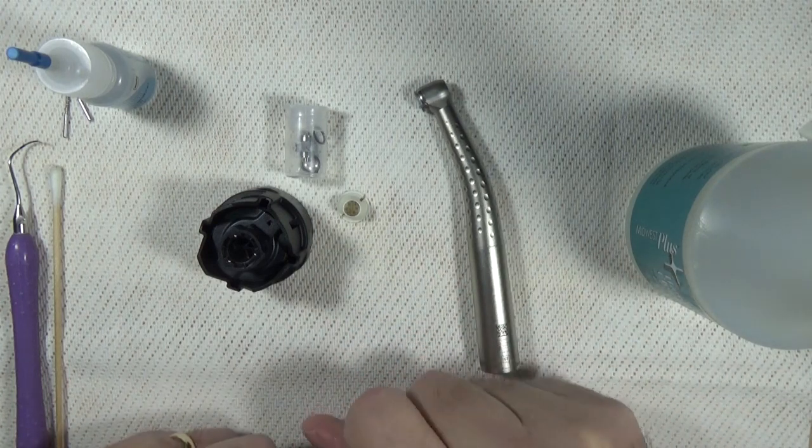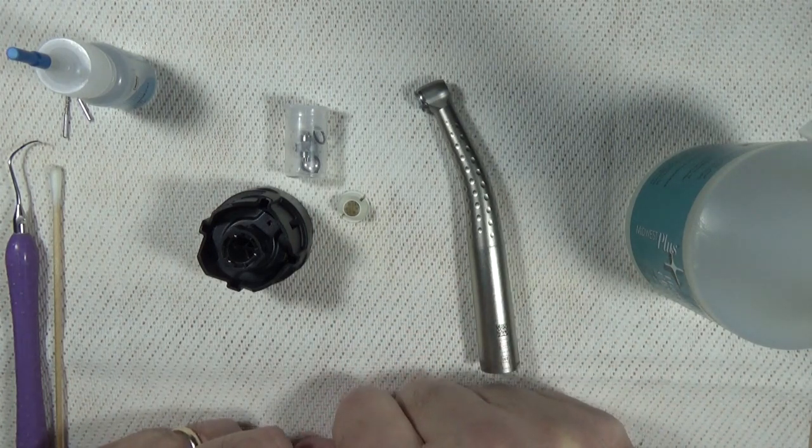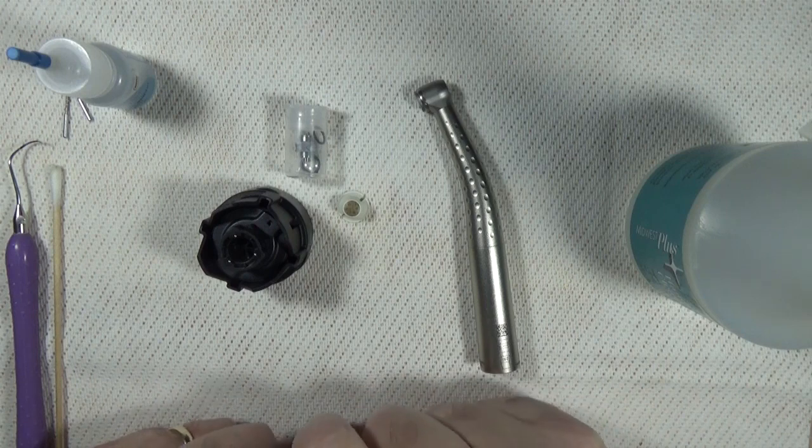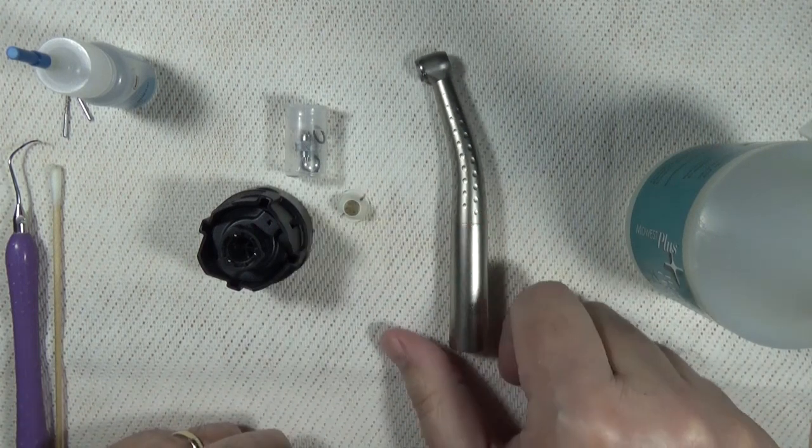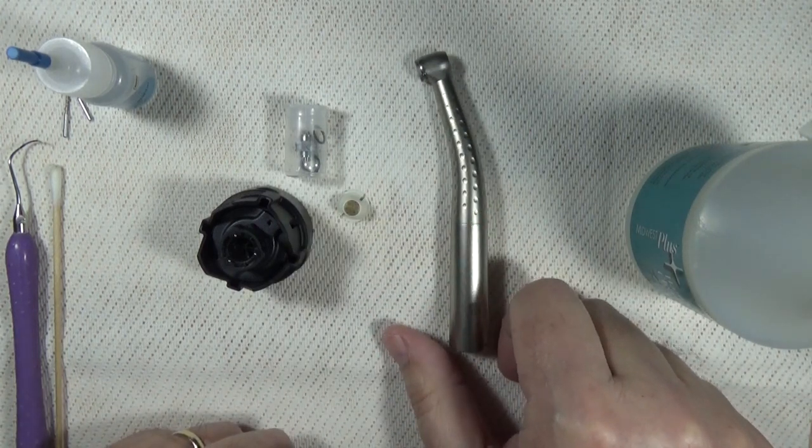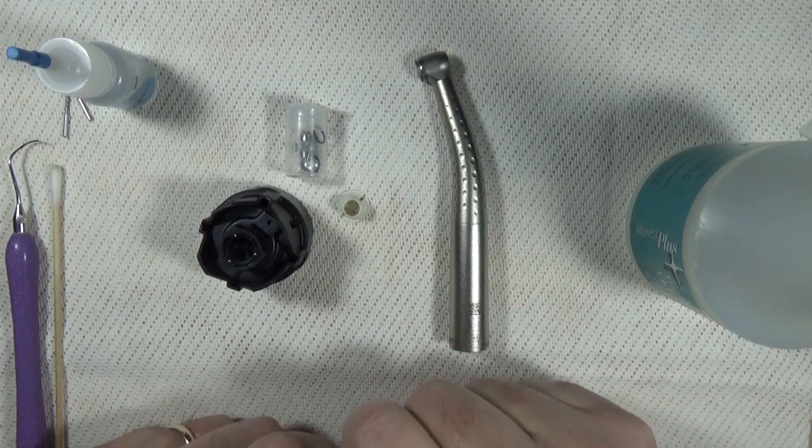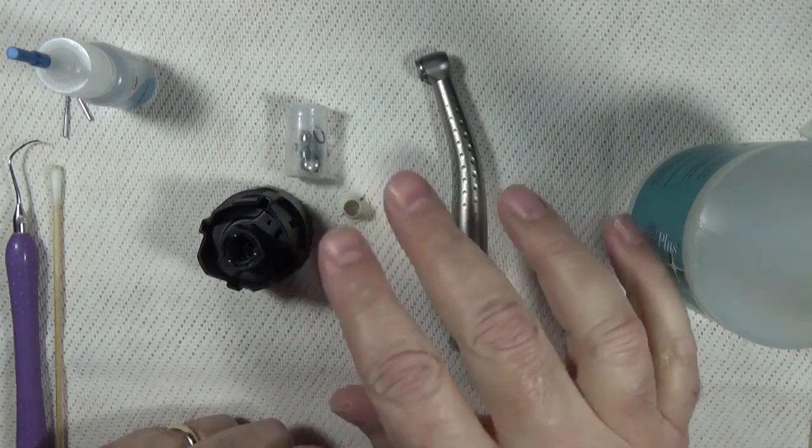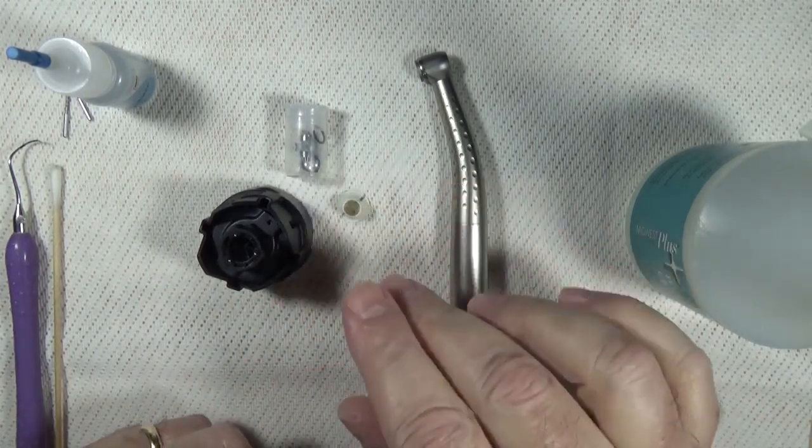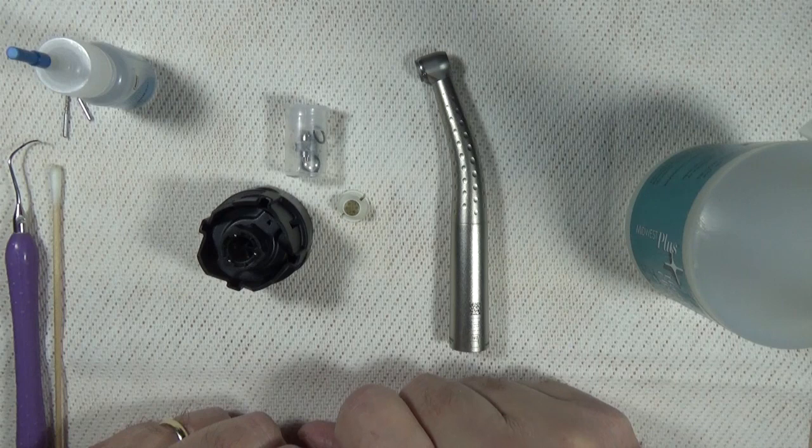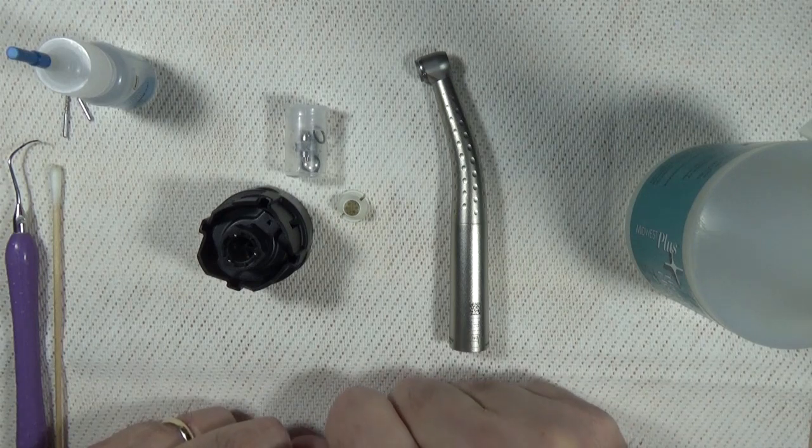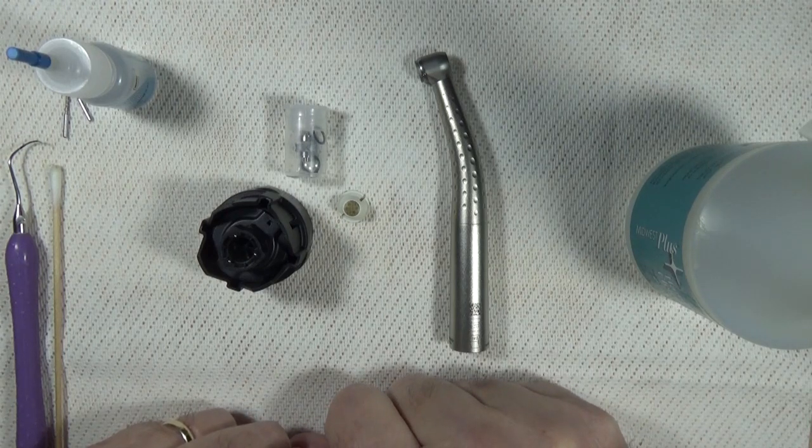This kit is very similar for all of the newer Midwest handpieces - the Tradition, Tradition Pro, the Stylus Plus, and then of course the Phoenix line. All these components are very similar, and the process itself will be the same for each of these replacements.